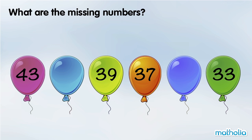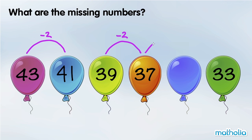What are the missing numbers? 39 minus 2 is 37. In each step, the numbers are going down by 2. 43 minus 2 is 41. 37 minus 2 is 35. The missing numbers are 41 and 35.